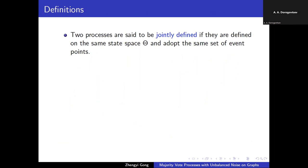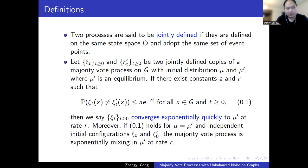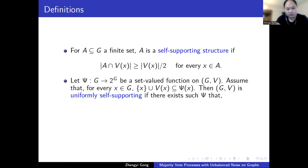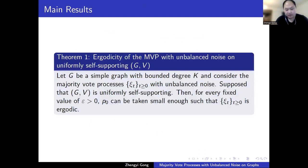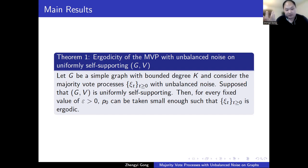The main result: for majority vote processes with nearest-neighbor interaction and unbalanced noise (p₁ > 0, noise favoring zero or one), on a uniformly self-supporting graph, the process is ergodic. A self-supporting structure is a finite cluster where every site has at least half of its voting neighborhood within the cluster — so ones can hold up under majority vote. A graph is uniformly self-supporting if every site has such a structure coverable by a ball of radius R₀.